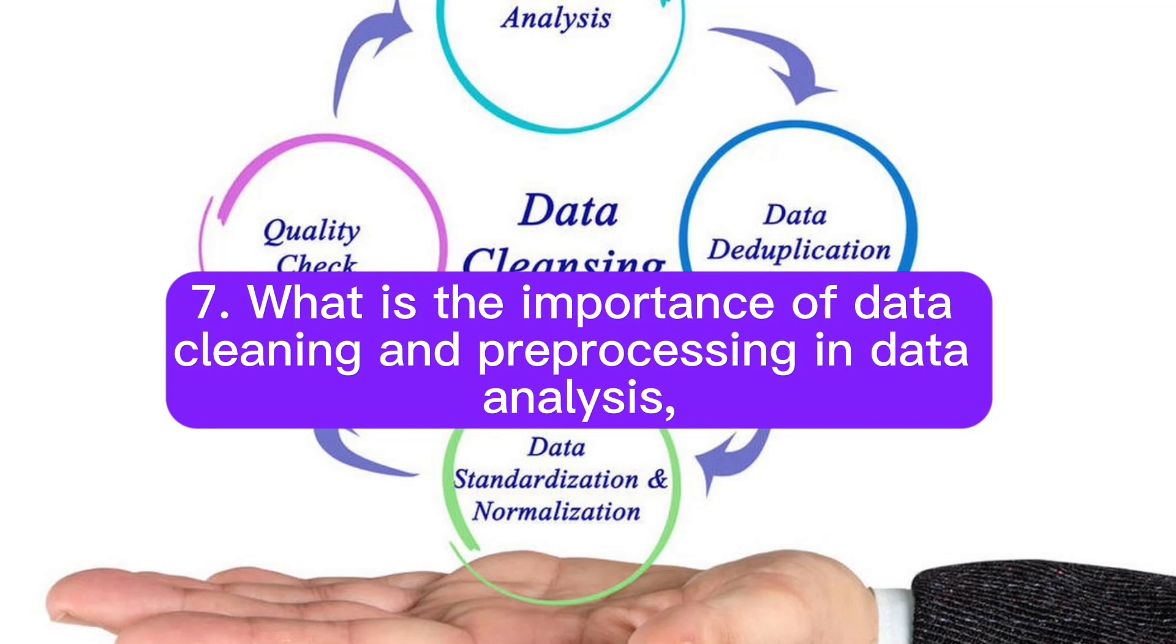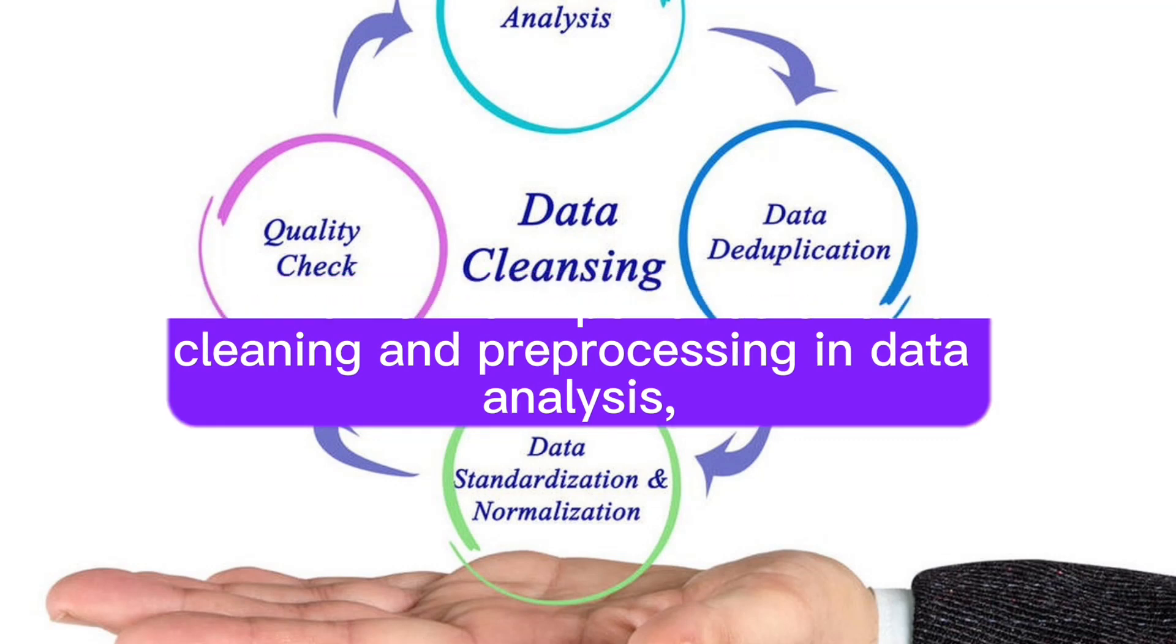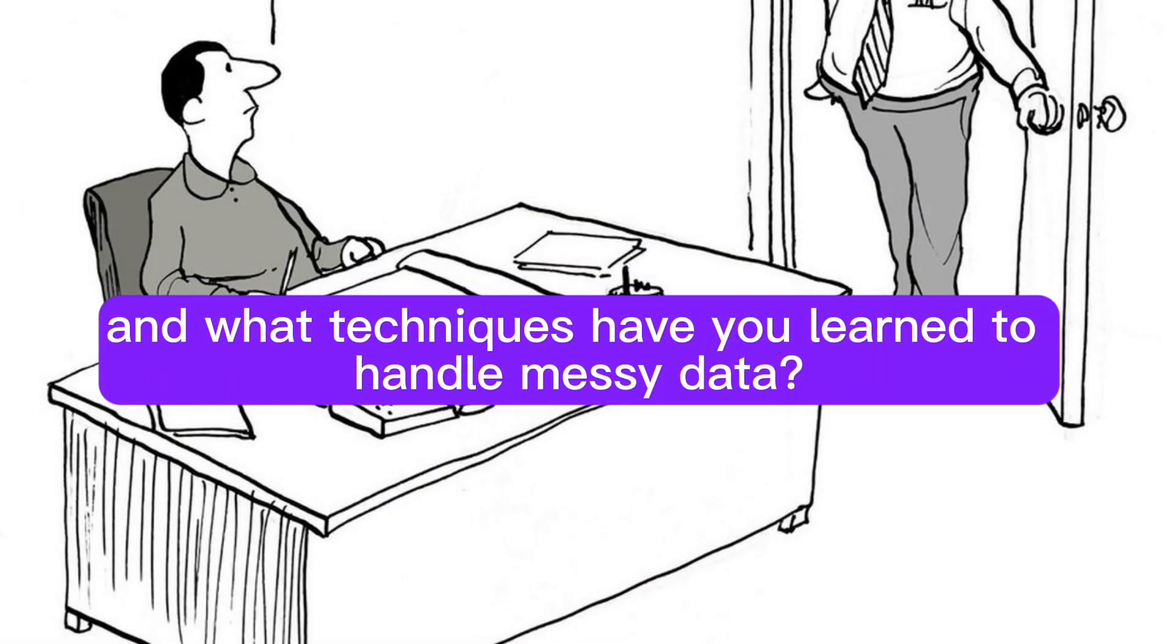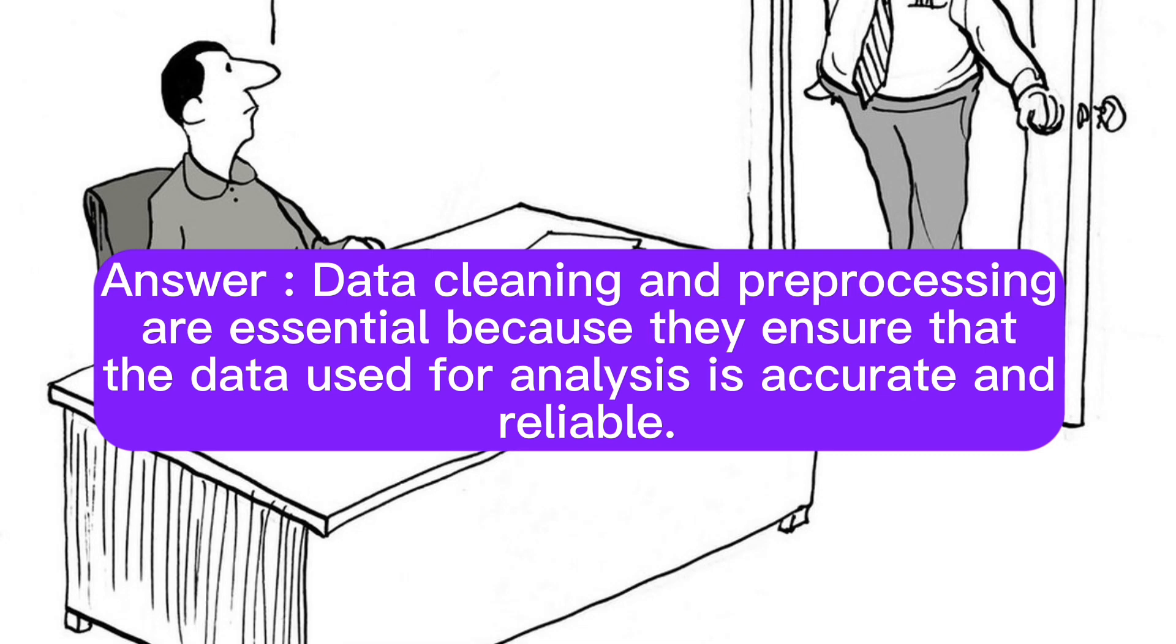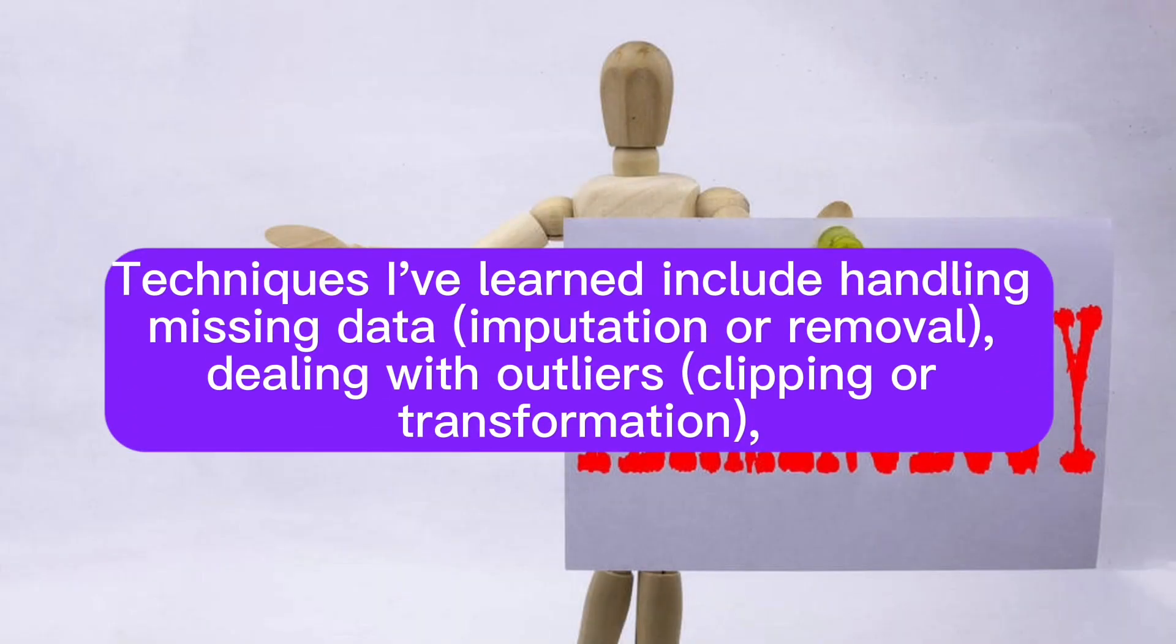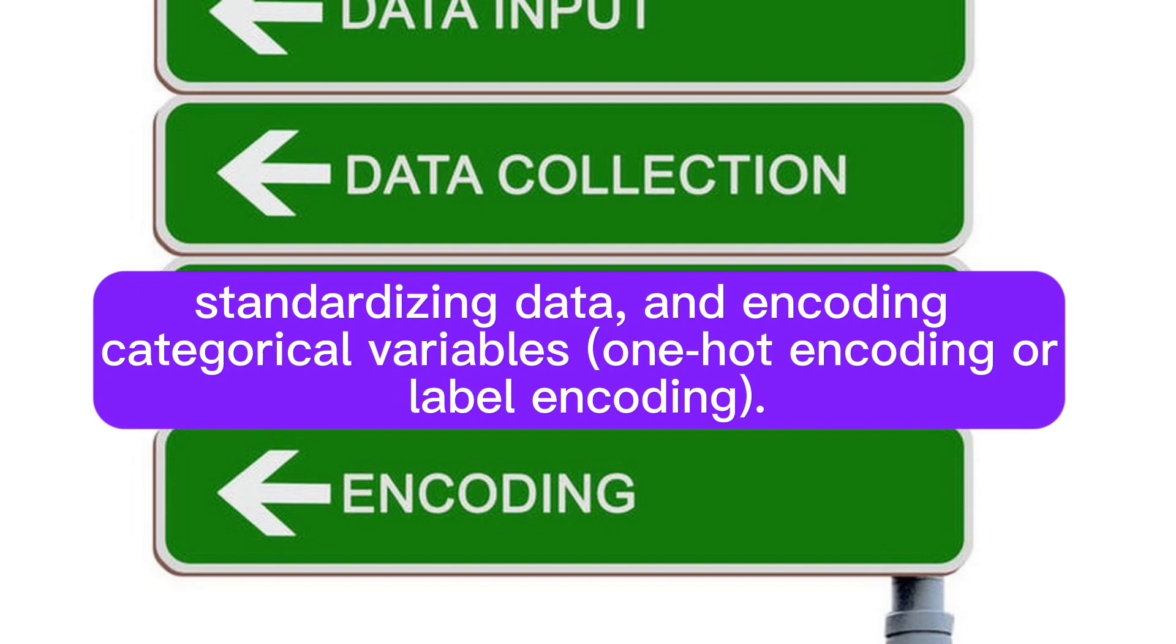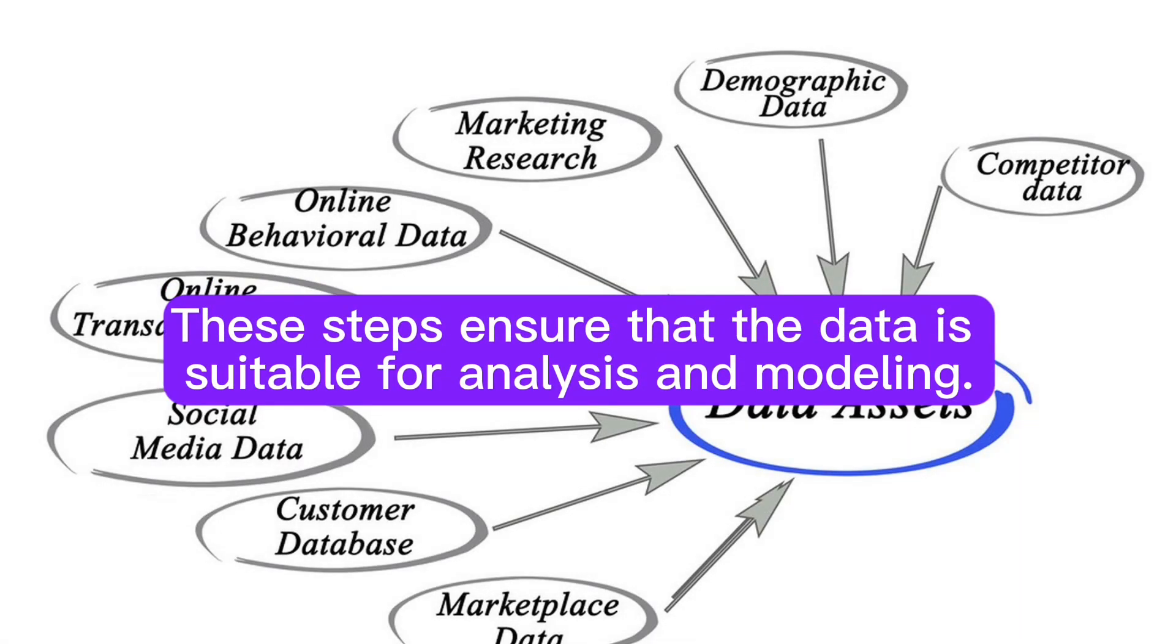Question 7: What is the importance of data cleaning and pre-processing in data analysis? And what techniques have you learned to handle messy data? Answer: Data cleaning and pre-processing are essential because they ensure that the data used for analysis is accurate and reliable. Techniques I've learned include handling missing data through imputation or removal, dealing with outliers through clipping or transformation, standardizing data, and encoding categorical variables through one-hot encoding or label encoding. These steps ensure that the data is suitable for analysis and modeling.